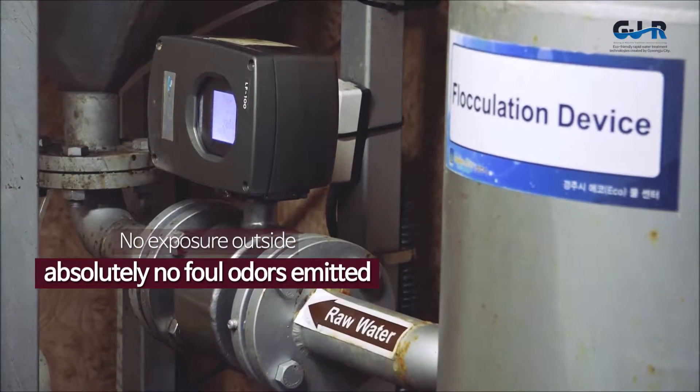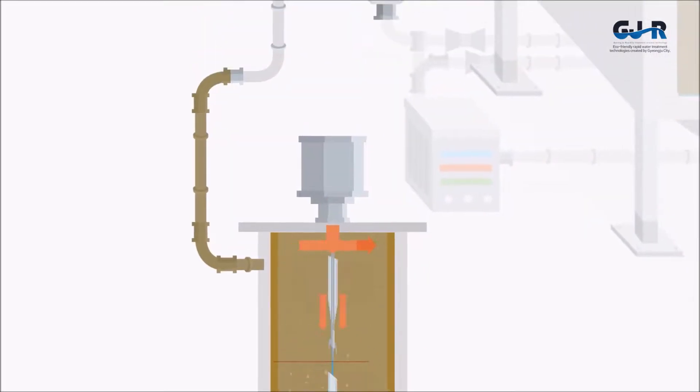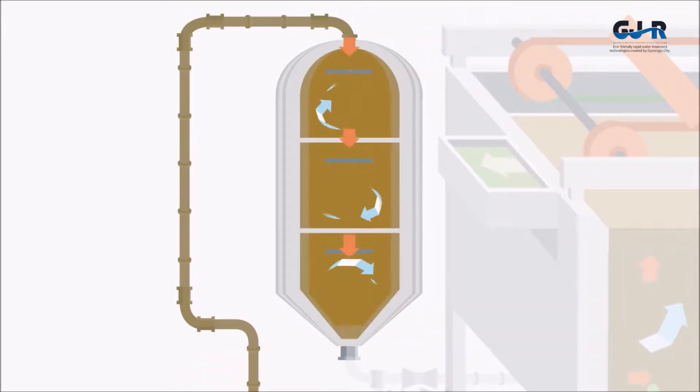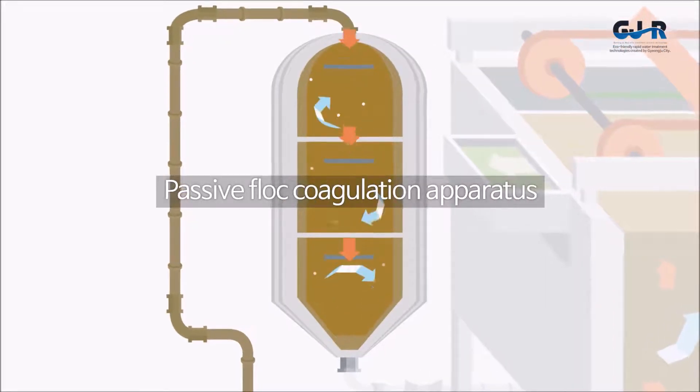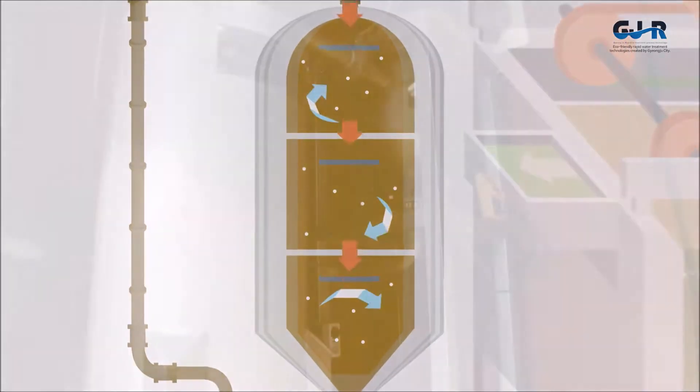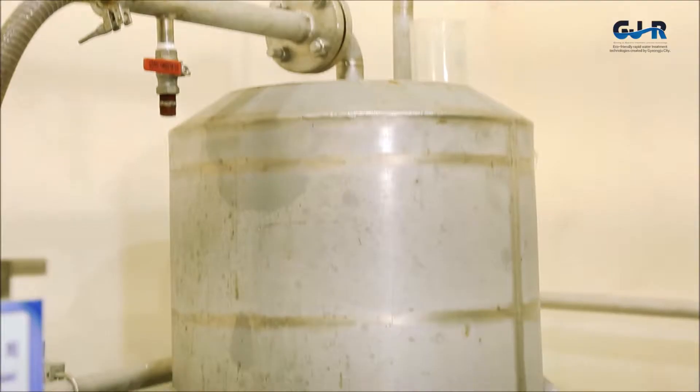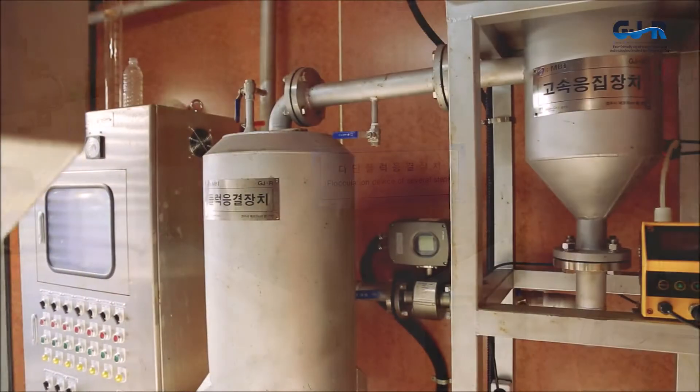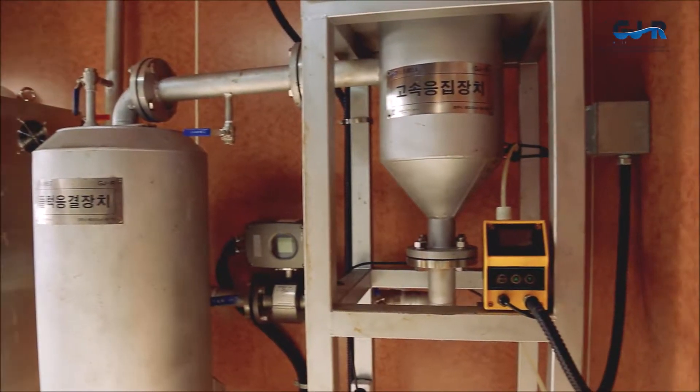The second phase includes a non-powered flocc cohesion apparatus and a multi-stage partition-type flotation unit that induces the bombardment of flocc, which improves cohesion and coagulation. It doesn't require agents nor additional energy costs, and since it is enclosed, maintenance becomes much easier.